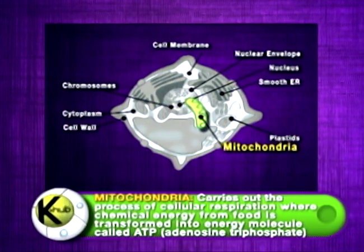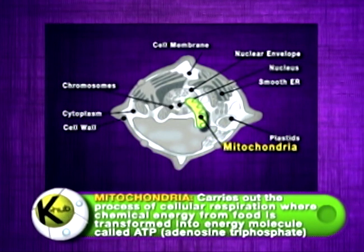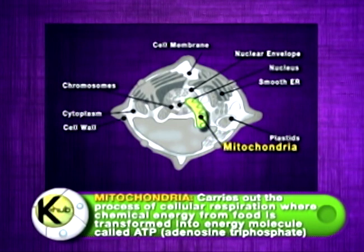The mitochondria carries out the process of cellular respiration, where chemical energy from food is transformed into an energy molecule called adenosine triphosphate, or ATP.